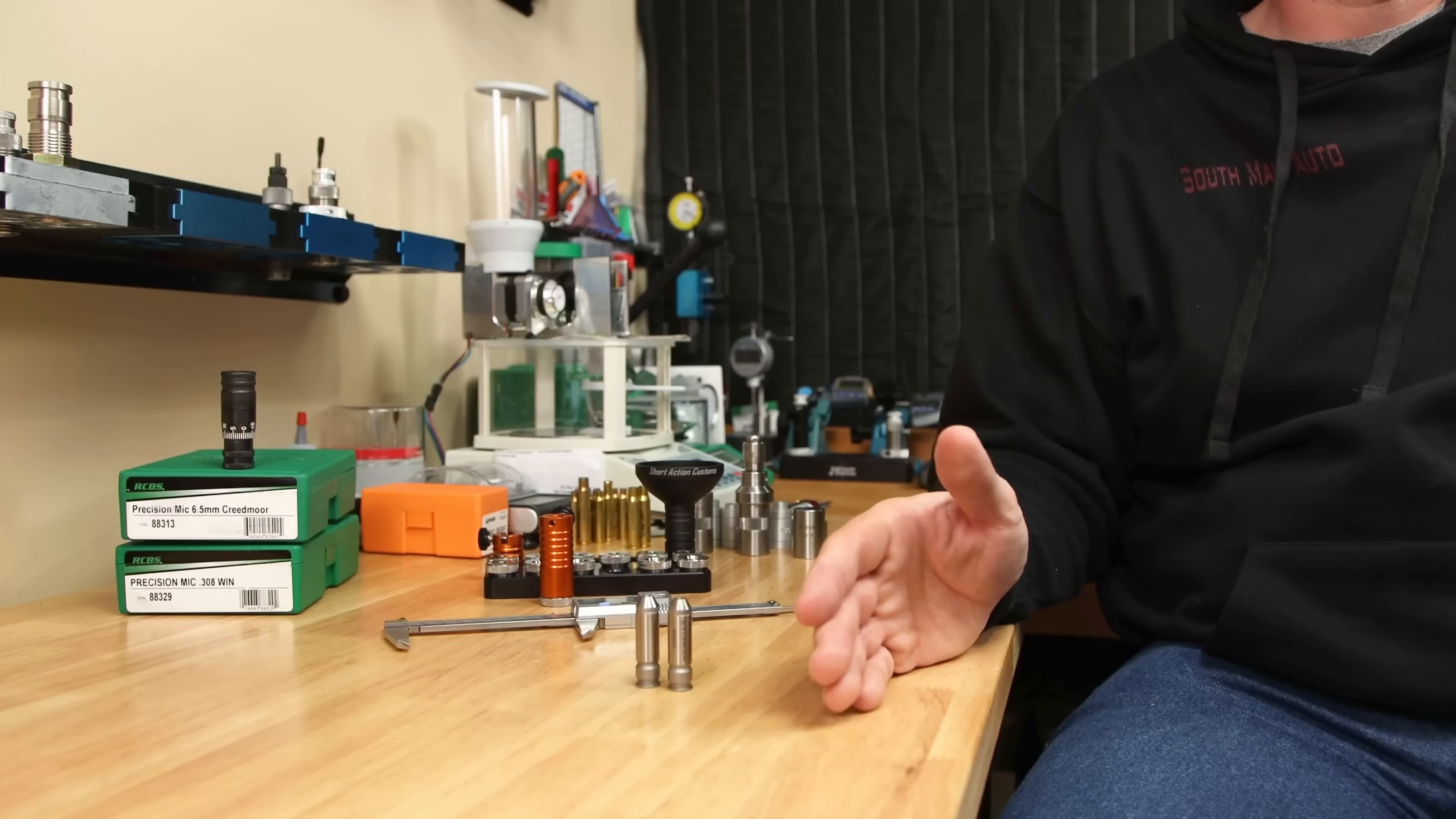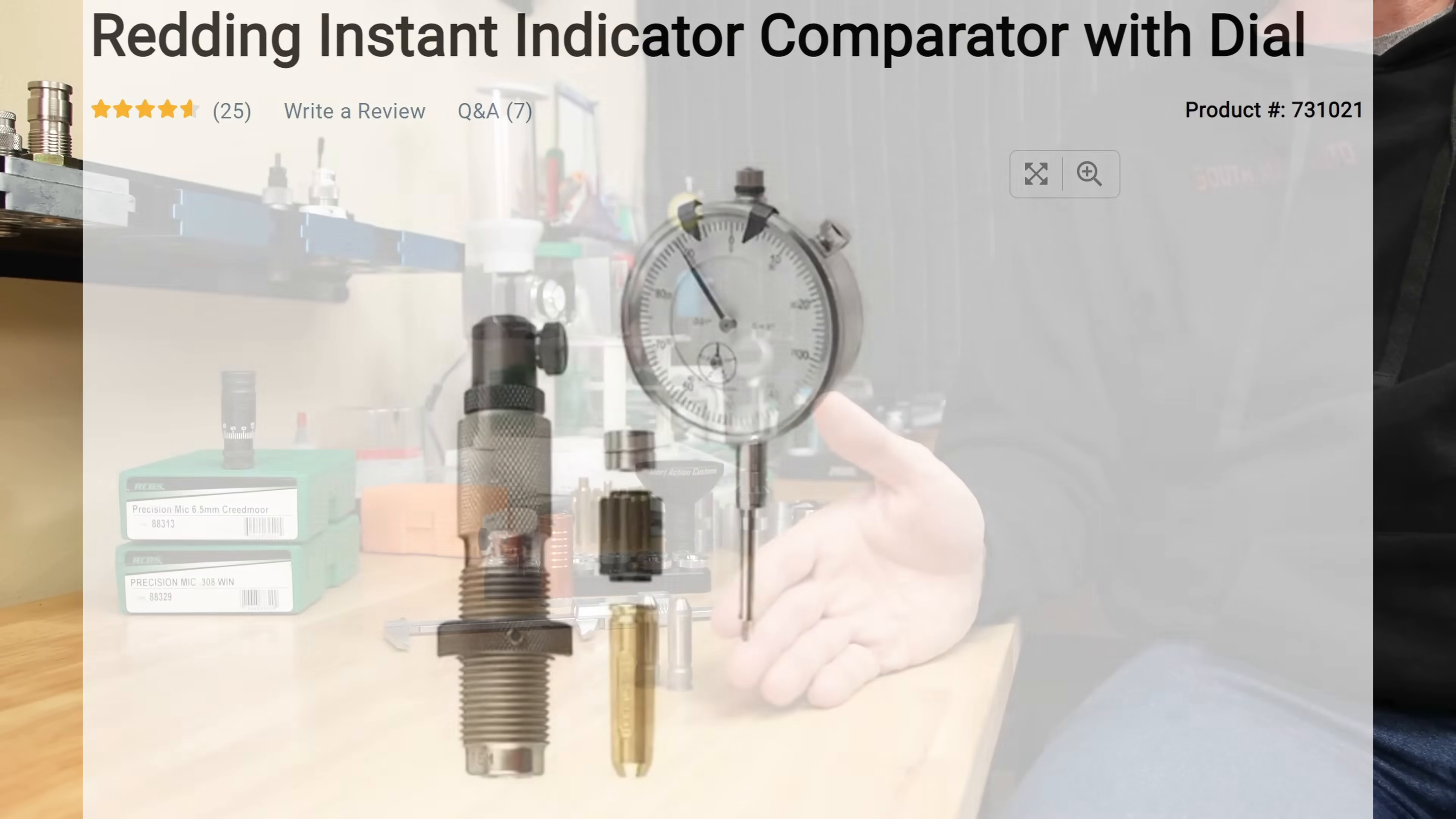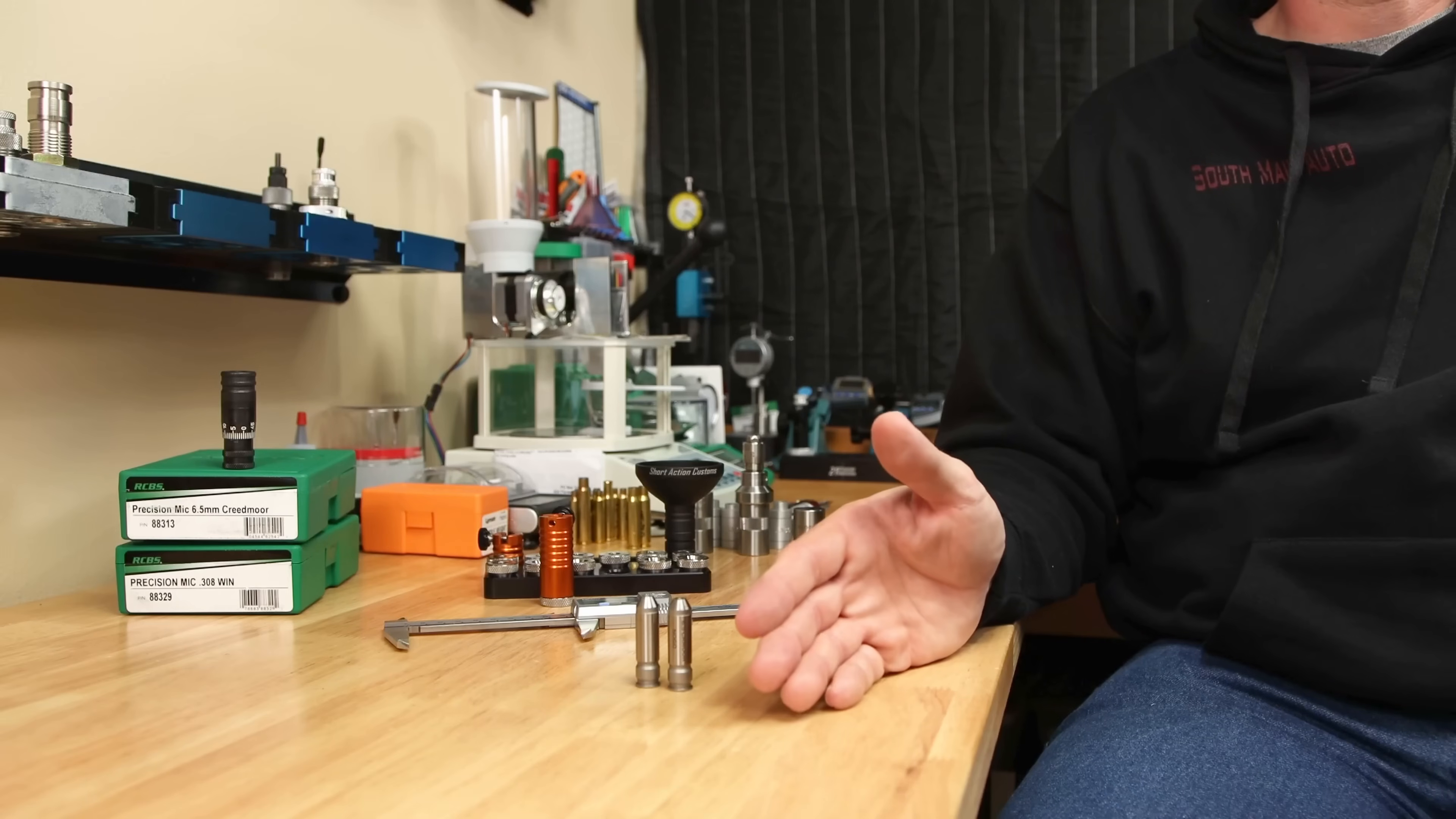As a bonus item, I'm sure if I don't mention, somebody else will in the comments below, is the Redding Instant Indicator. I don't have one personally, but I'm sure someone will tell you in the comments below how much they like theirs. It's a similar tool that does a similar job.